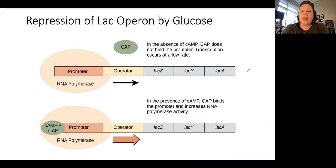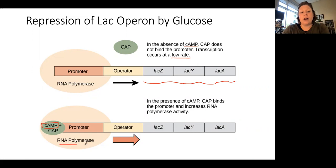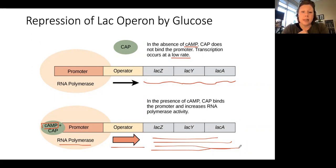Let's talk about how glucose can affect transcription of the lac operon. In the absence of cyclic AMP, the CAP protein does not bind the promoter, so we get only a little transcription — maybe one mRNA. However, when cyclic AMP is present inside the cell, the CAP protein plus cyclic AMP can bind to the promoter, and this does a better job of recruiting RNA polymerase, so we have much more active transcription and many more copies of RNA. Glucose isn't part of the story yet — so how does glucose relate to cyclic AMP levels?